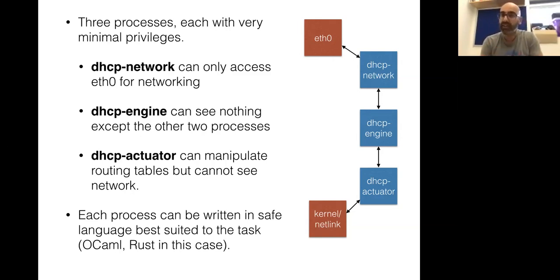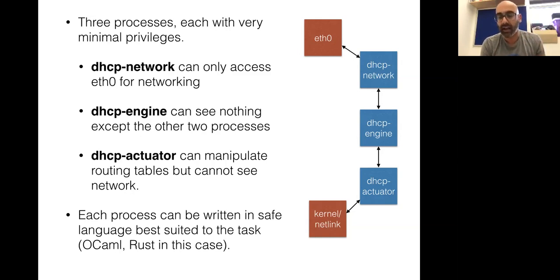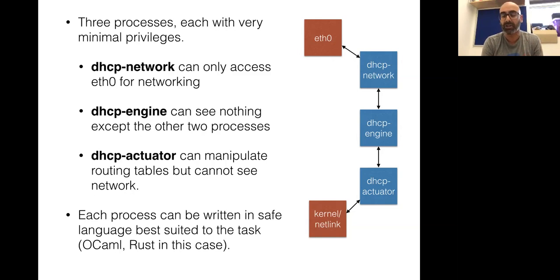Importantly, every single one of these processes can run in a separate container and can be written in the language best designed for that purpose. Rust is really good for building extremely low-level things with no garbage collector — we think we can build a hundred-kilobyte container or less just by manually crafting that to be as small as possible. OCaml is amazing at building formally verifiable state machines, so it's great for building the engine. Then you can chop and change each of these as you go along.